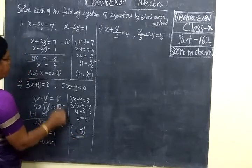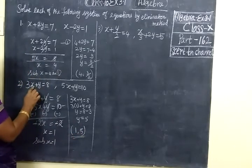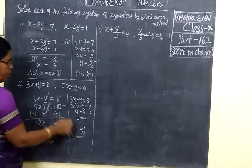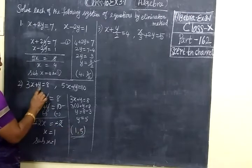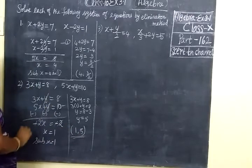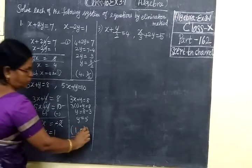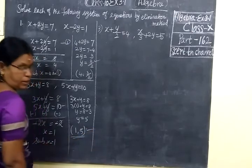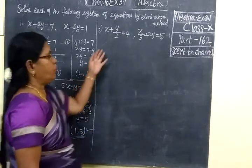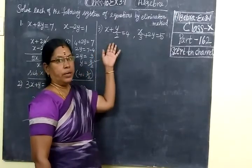Check the answer: substitute x equal to 1, so 3 into 1 is 3. For y substitute 5. So 3 plus 5 equal to 8. This answer is correct.